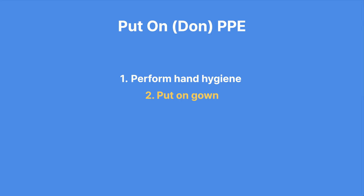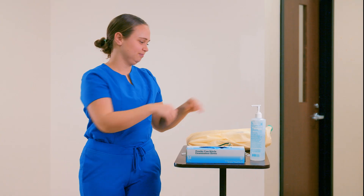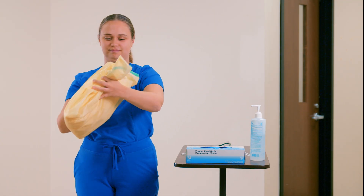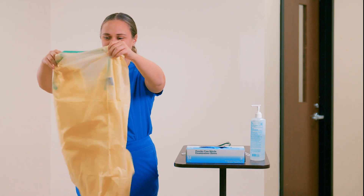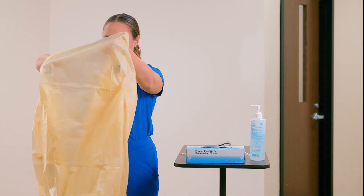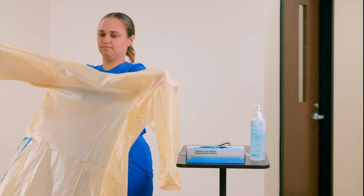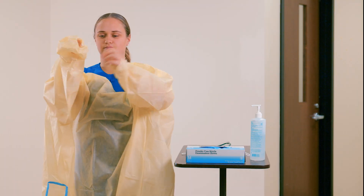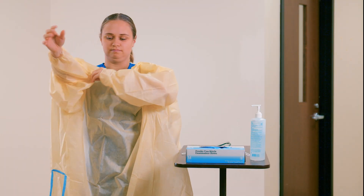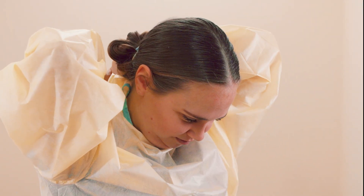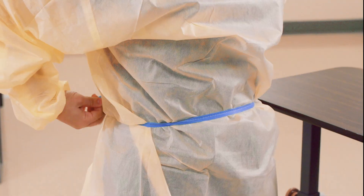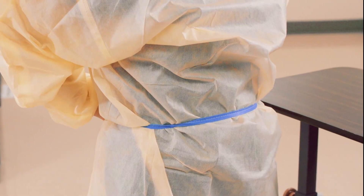Step 2: Put on gown. The gown serves as a barrier to protect your torso and clothing from potential splashes, sprays, or splatters of bodily fluids. Hold the gown away from your body to prevent any existing contaminants on your clothing or skin from coming into contact with the gown. Unfold it and slide your arms into the sleeves. Fasten the gown at the back and neck so it will stay in place during the procedure, providing consistent protection.